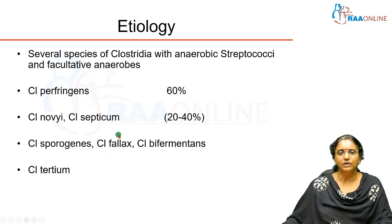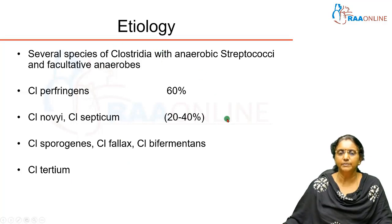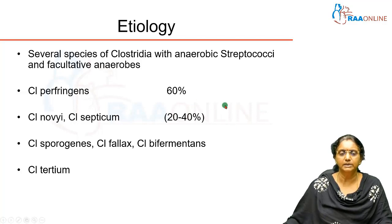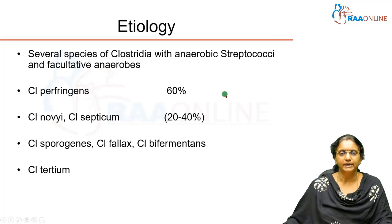Less common causes include Clostridium sporogenes, fallax, bifermentans, and Clostridium tertium. Clostridium as a genus consists of gram-positive bacilli that are anaerobic and spore-forming. The spores are typically bulging spores, meaning the diameter of the spore is much greater than the thickness of the bacterial body.